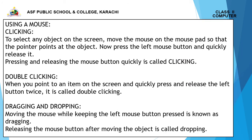Using a mouse — Clicking: To select an object on the screen, move the mouse on the mouse pad so that the pointer points at the object. Now press the left button and quickly release it. This is called clicking.